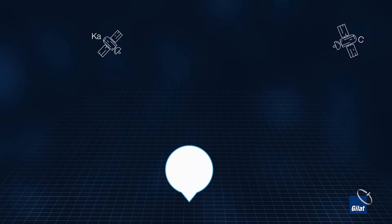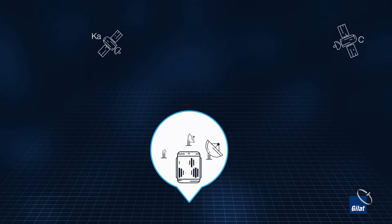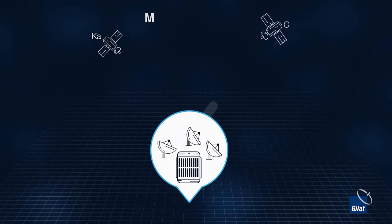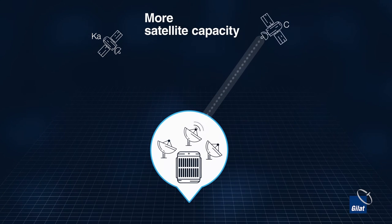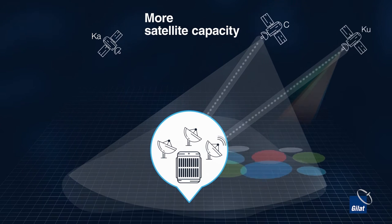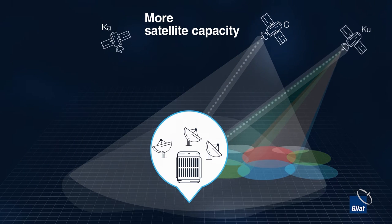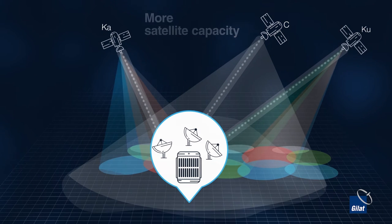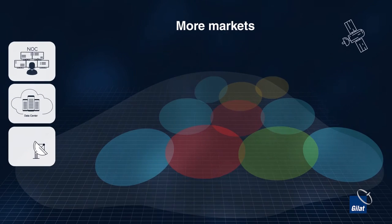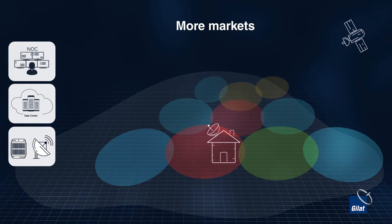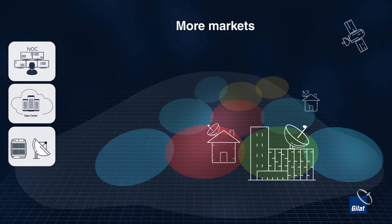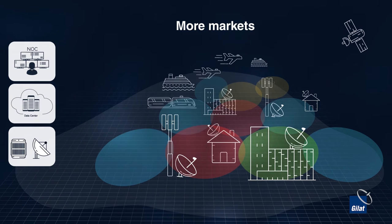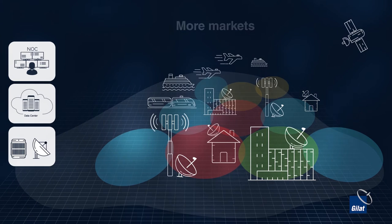You can also add satellite capability in any frequency band — C, Ku, or Ka. X-Architecture has been designed to support any market, from consumer broadband and enterprise to cellular and mobility applications.